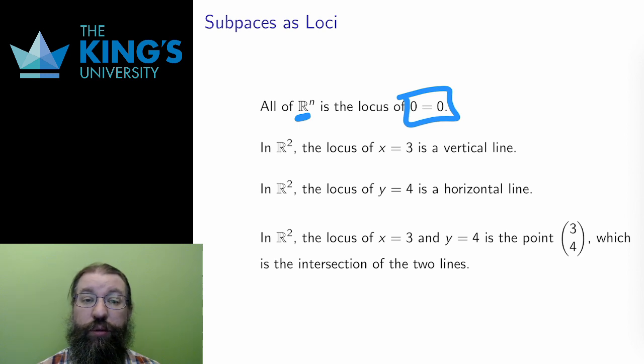In R2, the locus of x equals a constant is a vertical line. I did this review back at the start of calculus. x equals 3 is the vertical line that crosses the x-axis at 3. Likewise in R2, the locus of y equals a constant is a horizontal line. y equals 4 is the horizontal line that crosses the y-axis at 4.